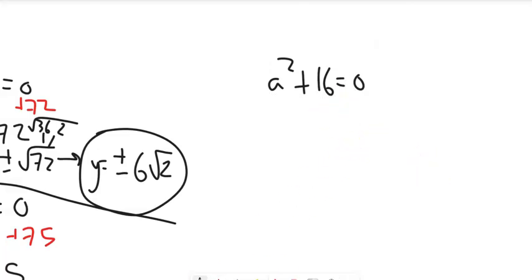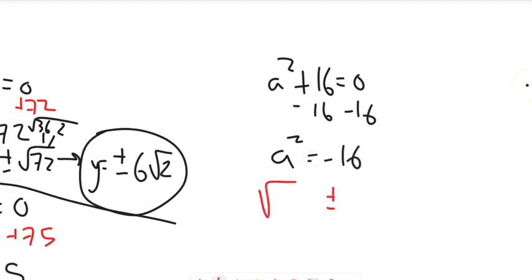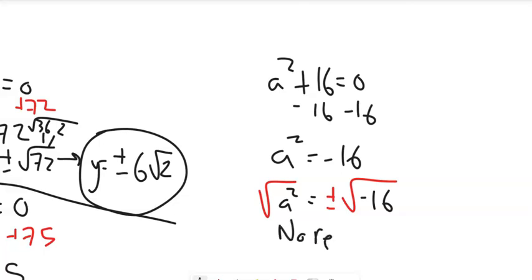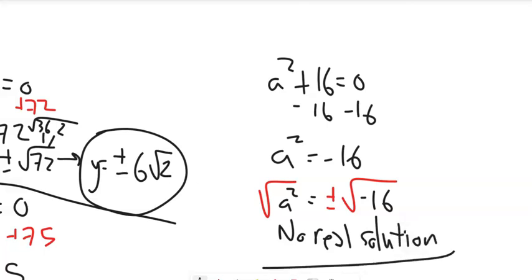Same idea here — subtract 16 from both sides, then square root both sides. Plus or minus comes in with it when you square root. But now I'm trying to take the square root of a negative. So right now I can say there is no real solution. I want to emphasize there are solutions — they are imaginary — we just haven't talked about imaginary numbers yet.